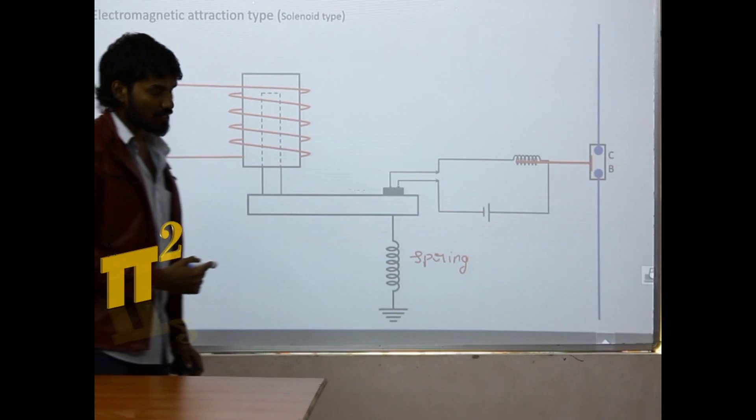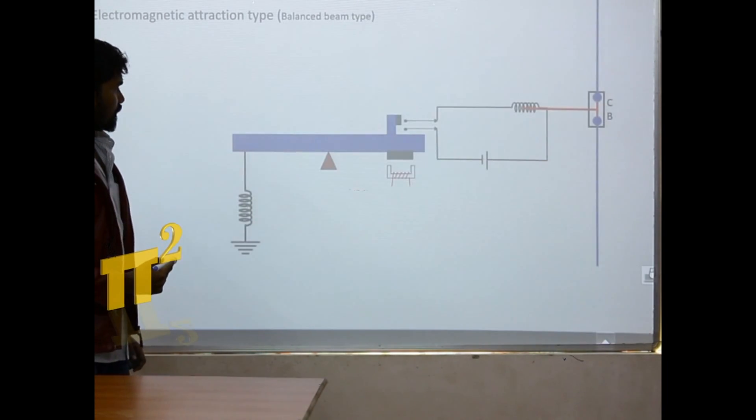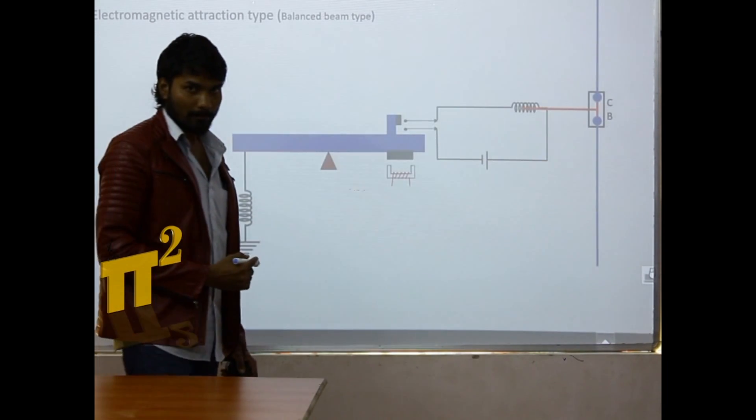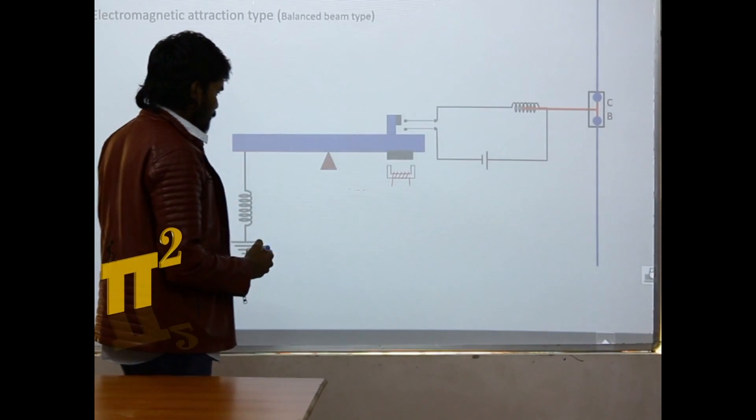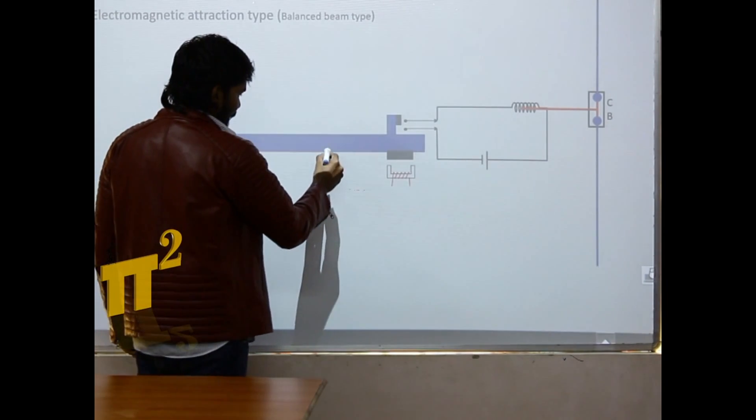Next, let's see another type. That is balance beam type. So it's a pretty simple one. We have a beam here.